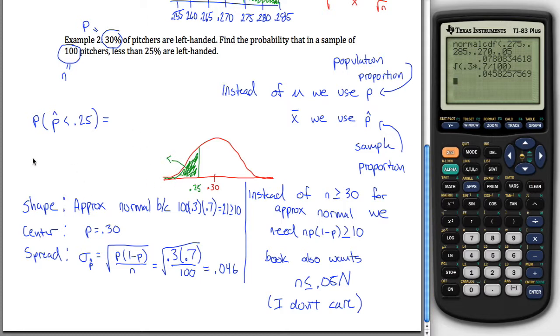To find this area, we're going to use the same function as we did above, normalcdf. And the arguments will be the same. The left bound, the right bound, the center, and then the spread, the mean and the standard deviation.